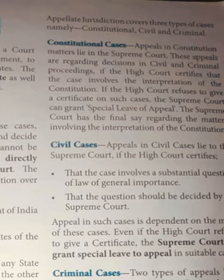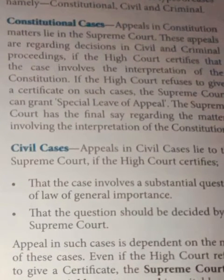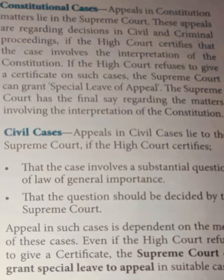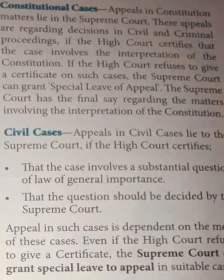Appellate jurisdiction covers three types of cases: constitutional, civil, and criminal. Constitutional cases are those involving interpretation of the Constitution. If the High Court refuses to give a certificate, the Supreme Court can grant special leave to appeal. In civil cases, appeals lie to the Supreme Court if the High Court certifies that the case involves important questions of law that should be decided by the Supreme Court. Even if the High Court refuses, the Supreme Court may grant special leave to appeal in suitable cases.